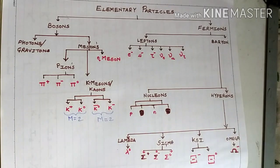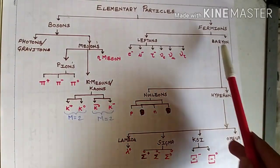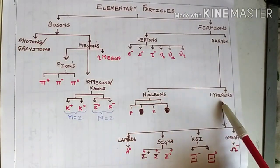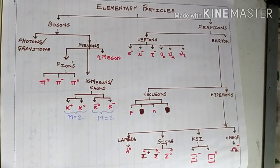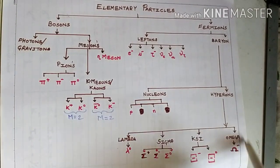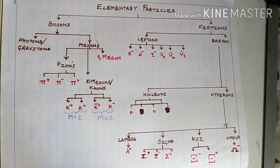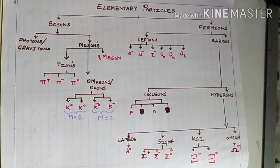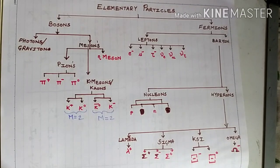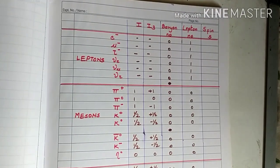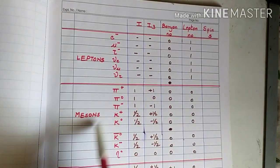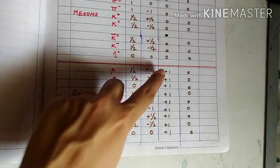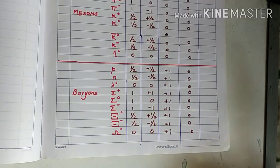If you check your elementary particles chart, you notice there is a section of baryons. All the particles under this branch — that is nucleons and hyperons — will have baryon number equal to one. All the remaining particles, that is leptons, mesons, and photons, would have baryon number zero. So baryon number for leptons and mesons is zero, and for baryons it is plus one.